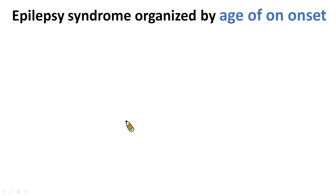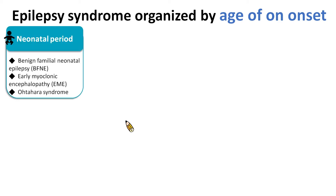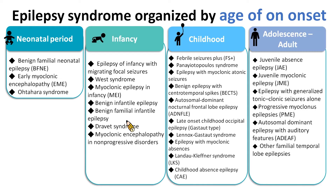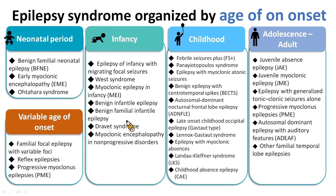There are many ways to categorize different epilepsy syndromes. One of the most common ways is to organize them by age of onset — namely the neonatal period, infancy, childhood, and adolescence — or some epilepsy syndromes have a variable age of onset. As you can see from the boxes, there are many epilepsy syndromes in each age group. Because of time constraints, I will not go into detail for every epilepsy syndrome; instead, I will show some examples in each age group.